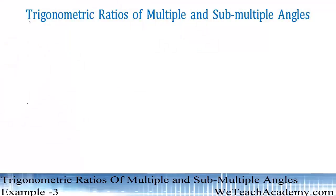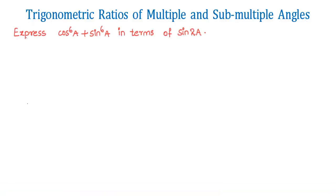Hello friends, welcome to VDitch Academy. In this section we are going to deal with a few examples on trigonometric ratios of multiple and submultiple angles. The given example is: express cos to the power 6a plus sin to the power 6a in terms of sin 2a.